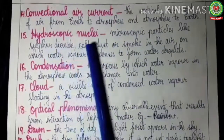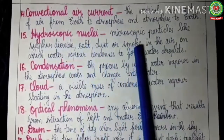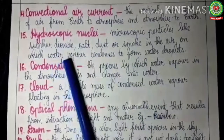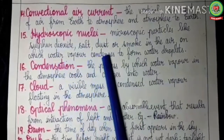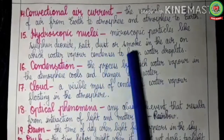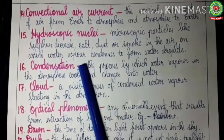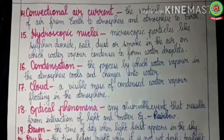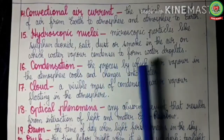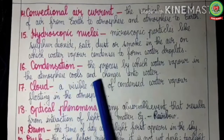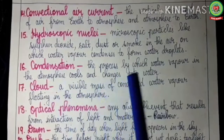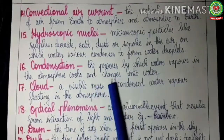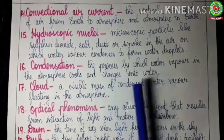Hygroscopic nuclei: microscopic particles like sulphur dioxide, salt, dust or smoke in the air on which water vapor condenses to form water droplets or clouds. Condensation: the process by which water vapor in the atmosphere cools and changes into water.